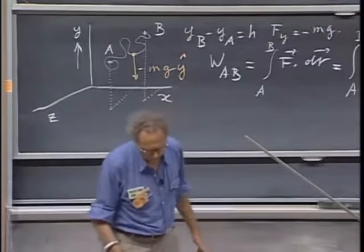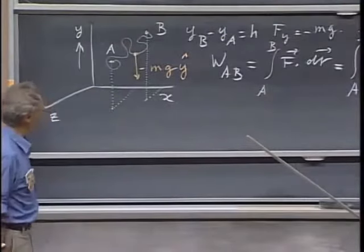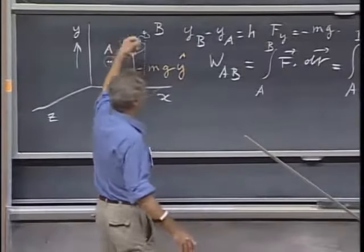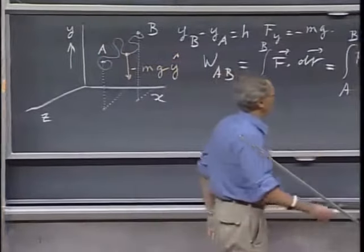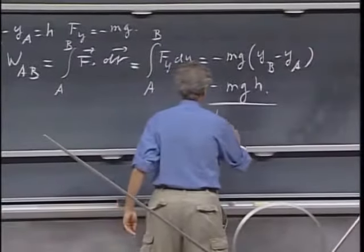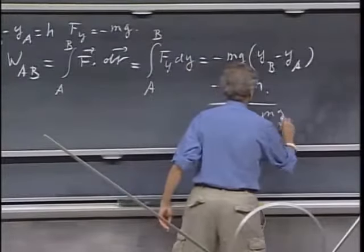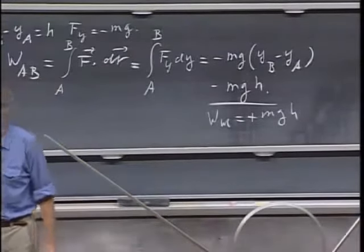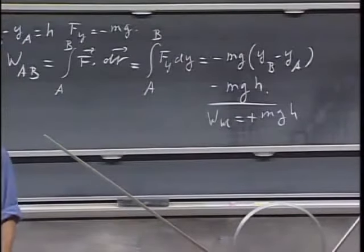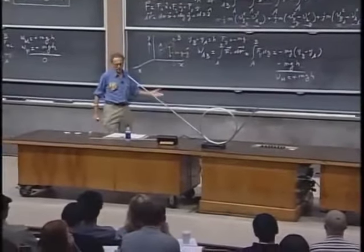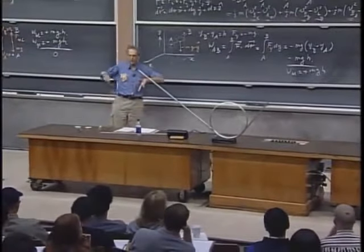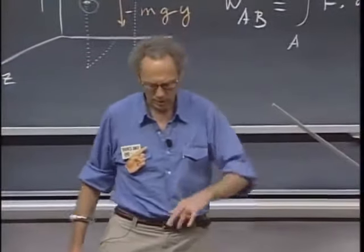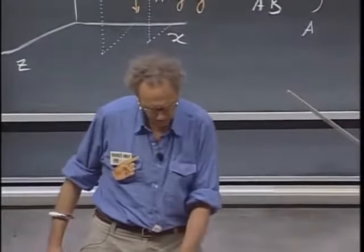Suppose that I do the work that I go from A to B in some very strange way, then it is very clear that the work that I would have done would be plus mgh, because my force is exactly in the opposite direction as gravity. So whenever gravity is doing positive work, I would be doing negative work. If I hold it in my hand, when I'm doing positive work, gravity is doing negative work.